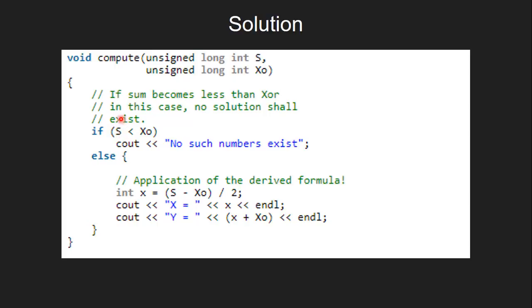Now we also know that the sum can never be less than XOR value. So if our sum value is smaller than XOR value, we simply print no such numbers exist.